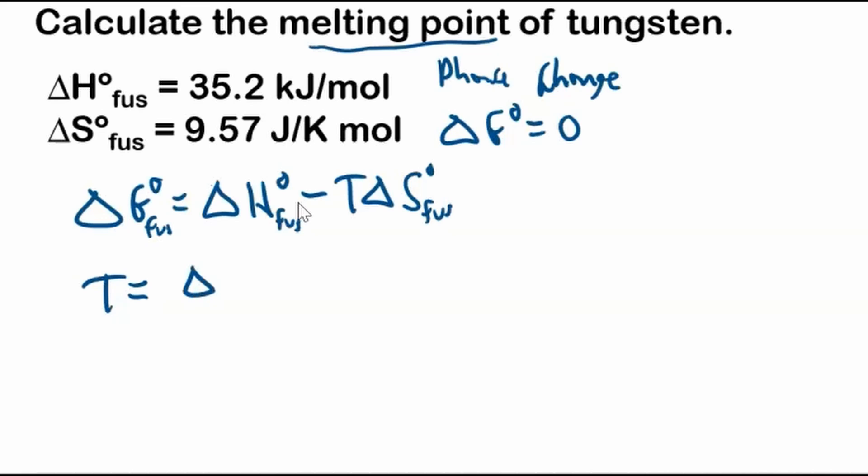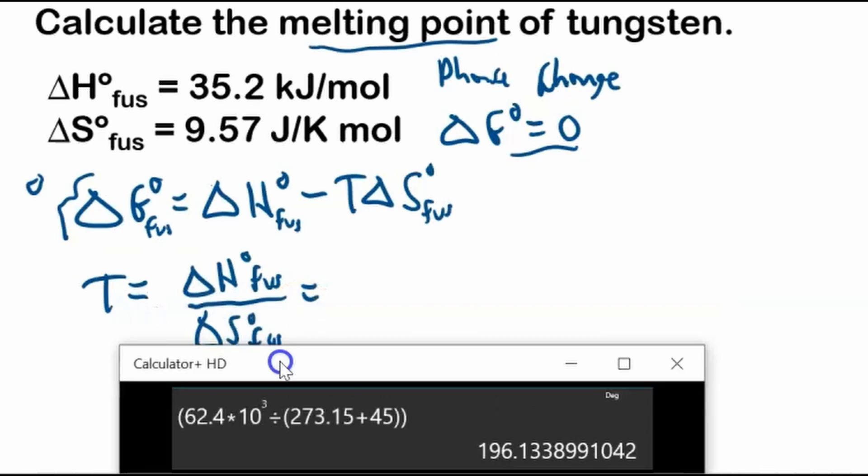And we're solving for the melting point this time, so the temperature will equal, if we rearrange this, this Gibbs free energy is zero, and then we just solve for T is the change in enthalpy of fusion divided by the entropy change of fusion, doing a couple algebraic steps at the same time.